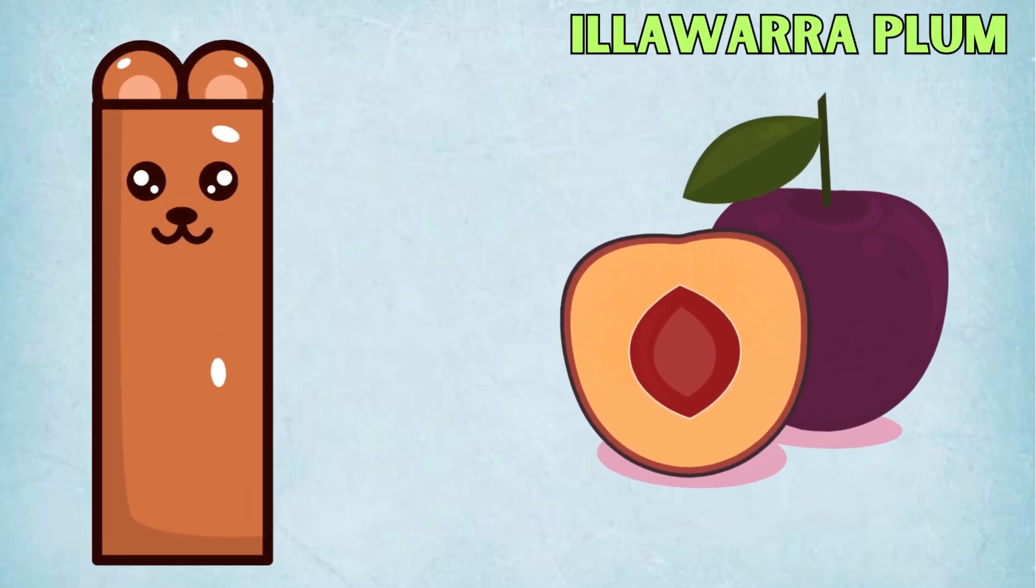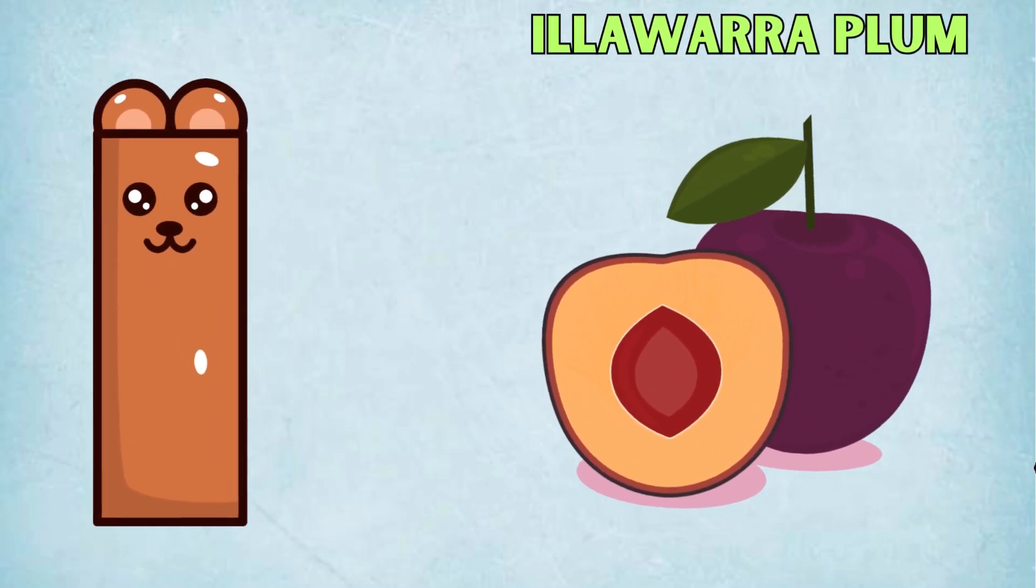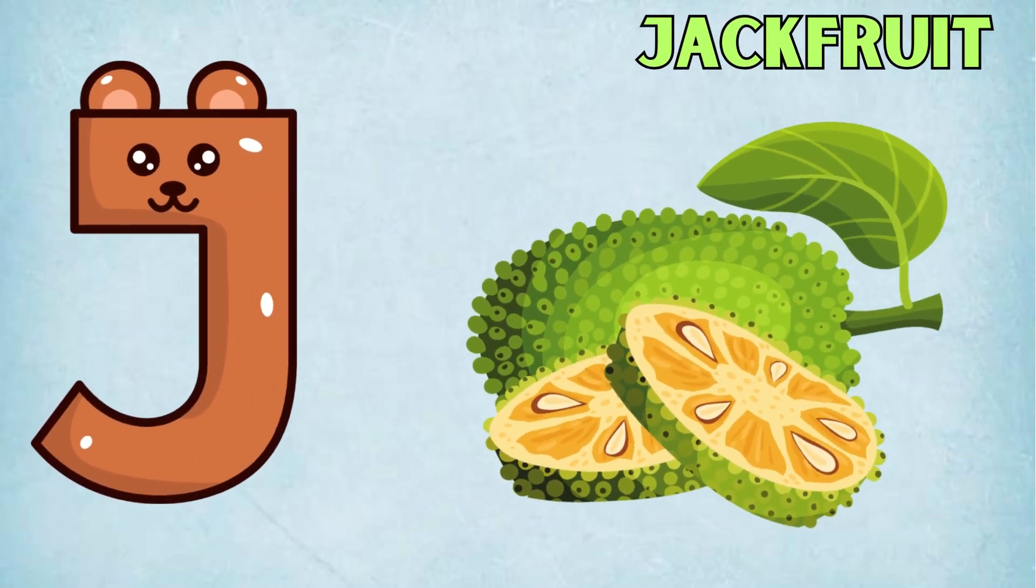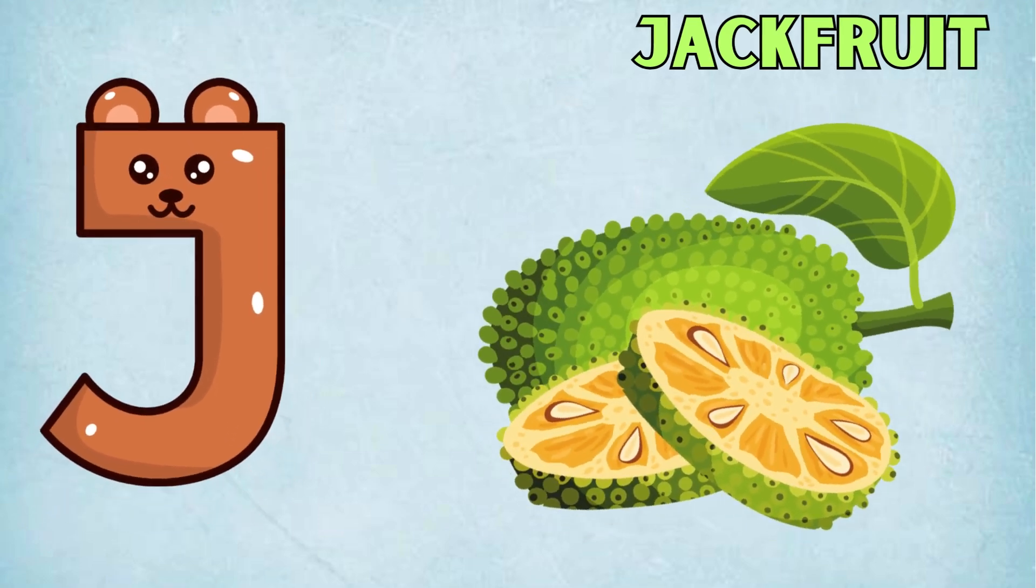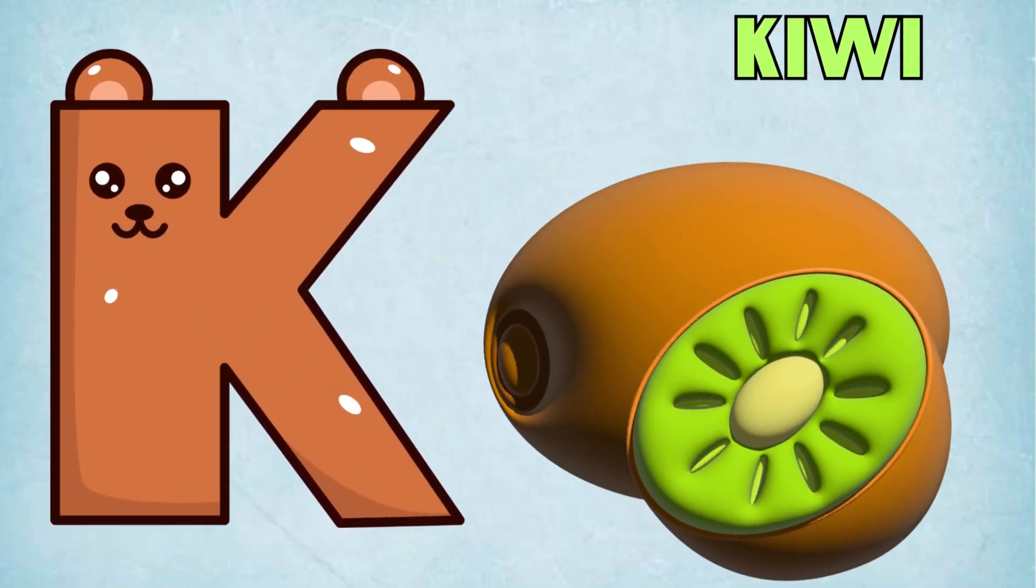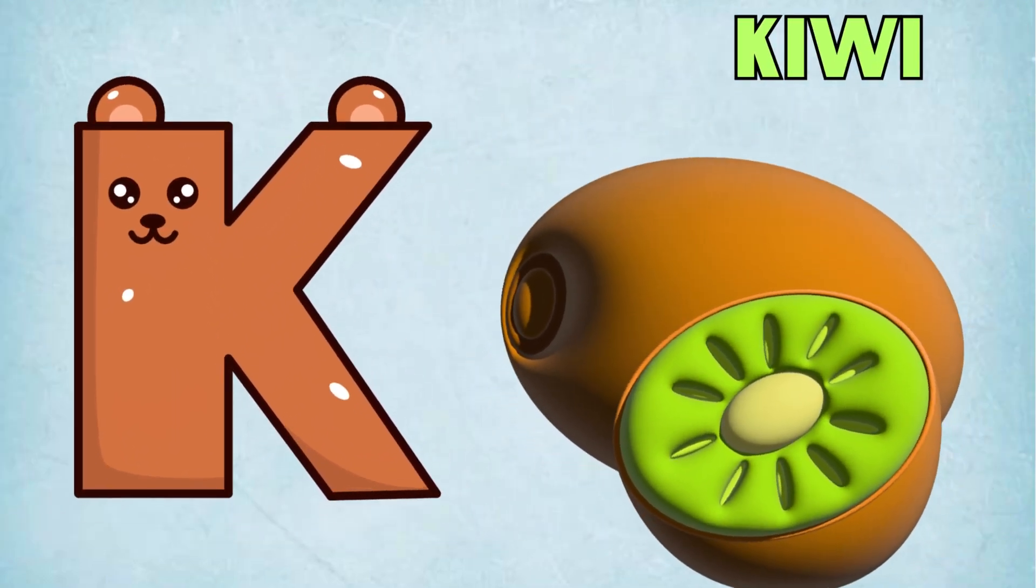I is for Illawarra Plum, I, I, Illawarra Plum. J is for Jackfruit, J, J, Jackfruit. K is for Kiwi, K, K, Kiwi.